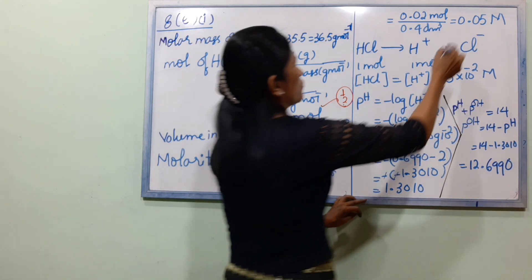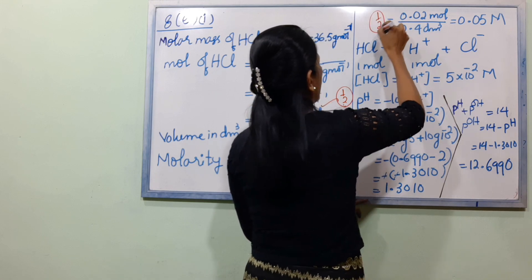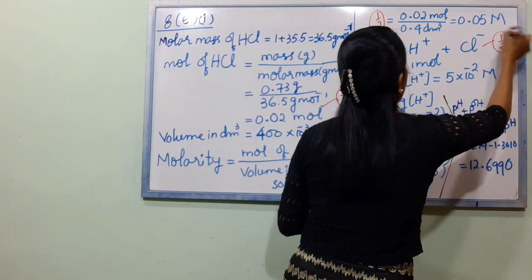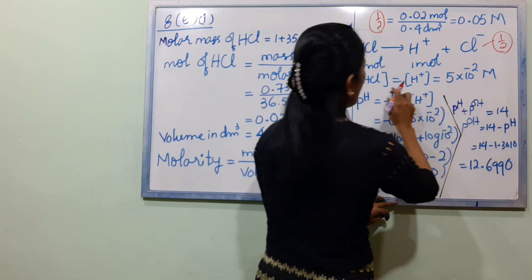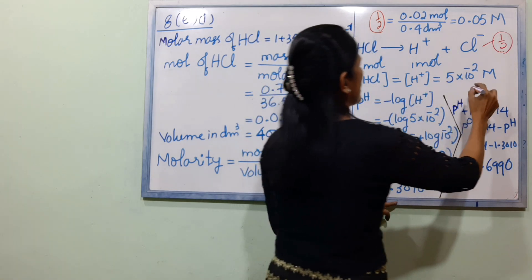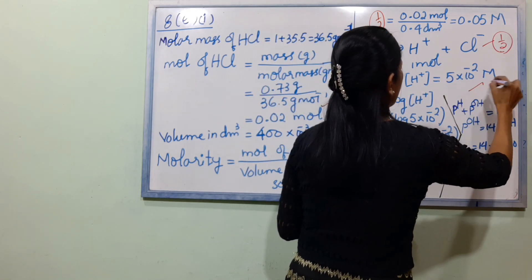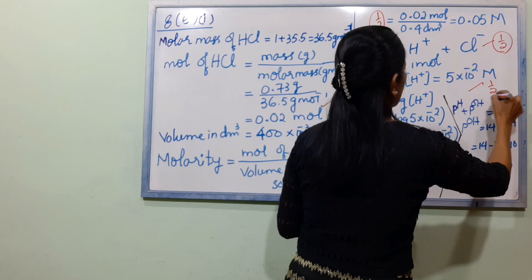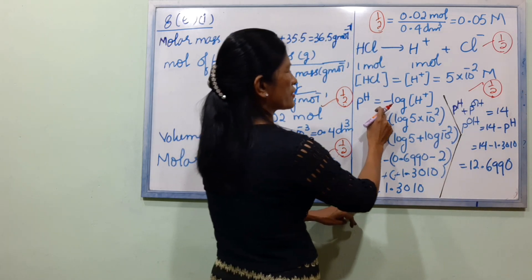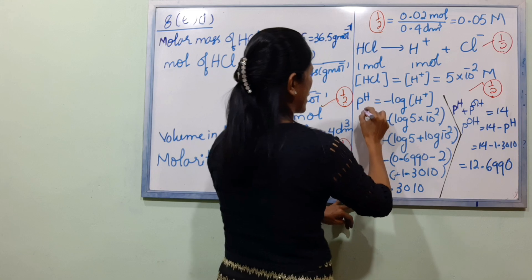The question is the calculation of the pH. Here we have the equation. Let's see what the concentration line is. pH equals minus log of the H⁺ concentration.